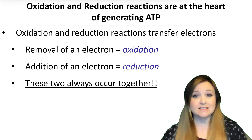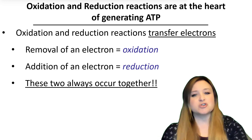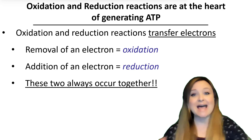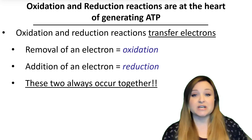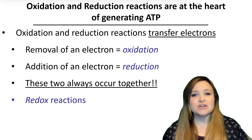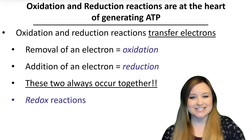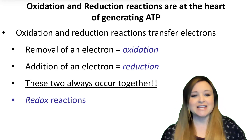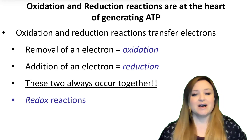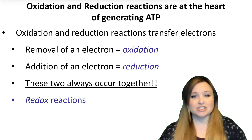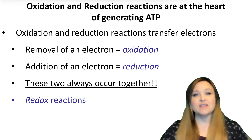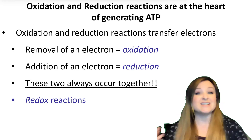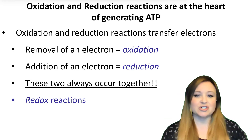These two always occur together, and it makes sense because if a molecule is oxidized, those electrons have to go somewhere. Those electrons are transferred to another molecule, and that other molecule is reduced because it has gained the electrons. Oxidation and reduction reactions always occur together, and so you'll hear them termed redox reactions.